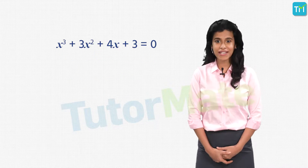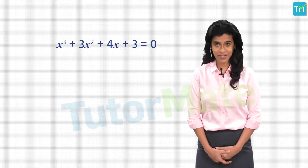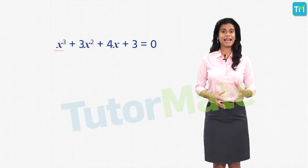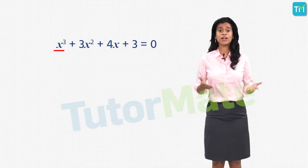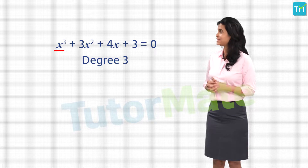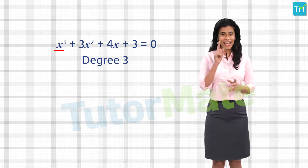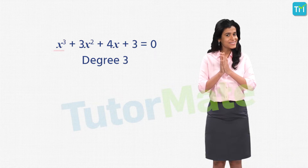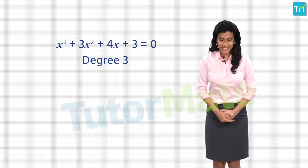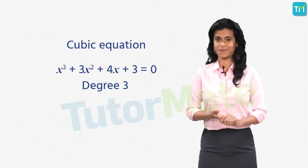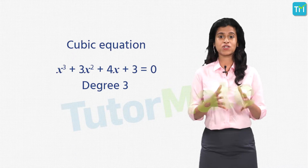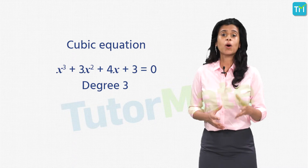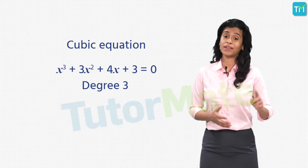And finally the third equation is x cubed plus 3x squared plus 4x plus 3 is equal to 0. Here the variable x has its highest power as 3 and so the degree of the equation is 3. Such an equation is called a cubic equation. So the classification of equations based on their degree is very similar to how polynomials are classified based on their degrees.